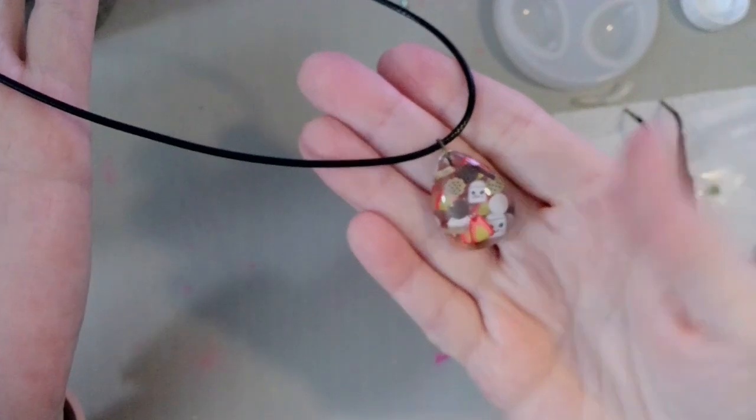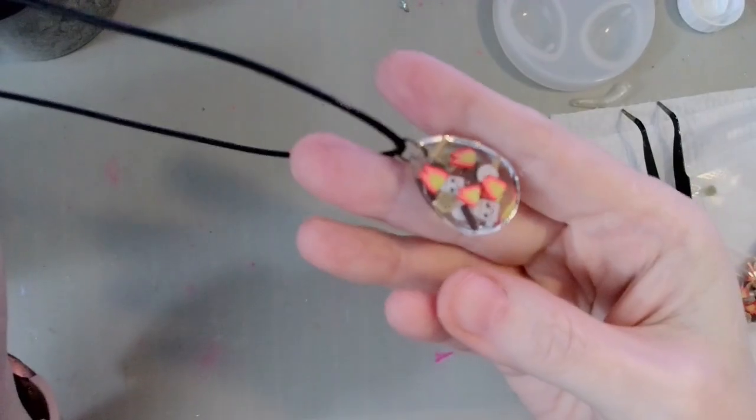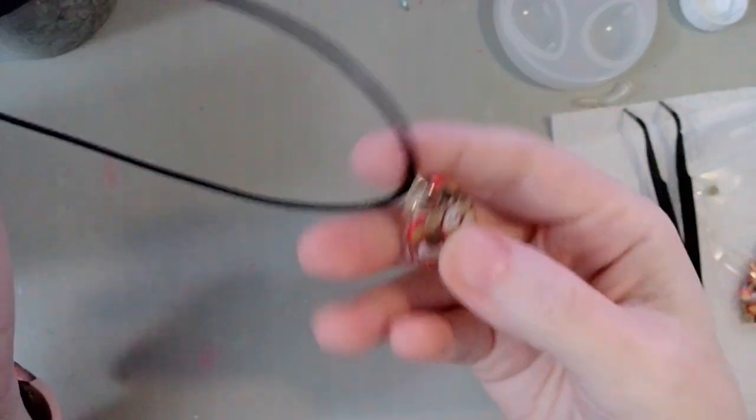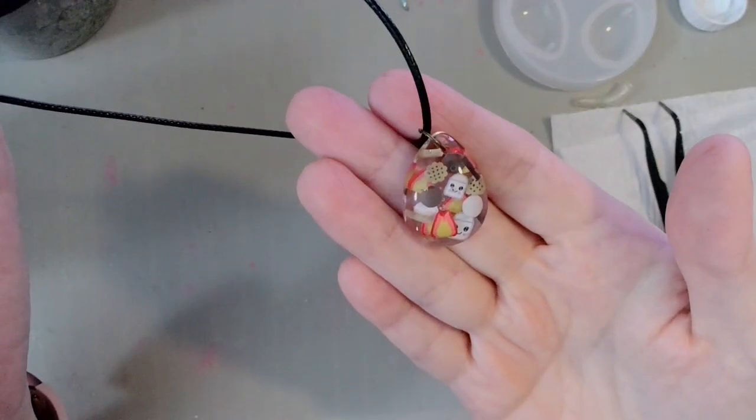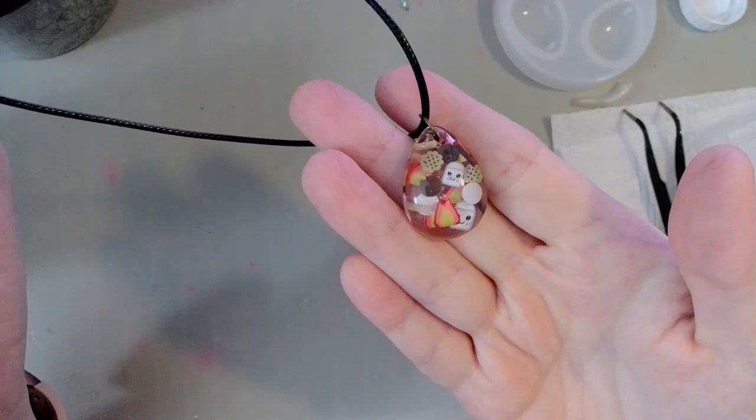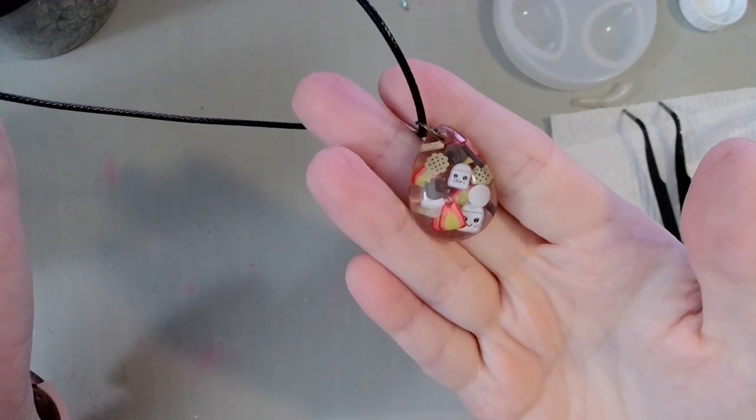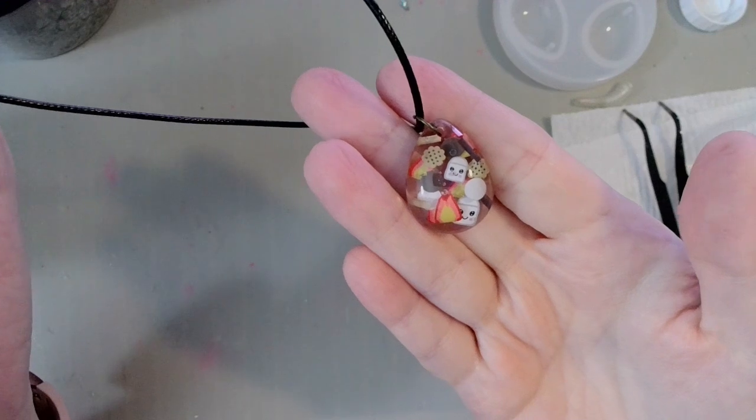There we go! And even if it flips over, it's still super cute on the other side. Look! So anyway, cute quick little project. Fun to make with kids—they can pick which ones they want, but you know, adults do the UV resin part.